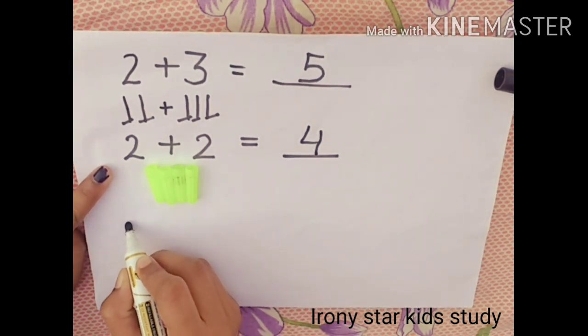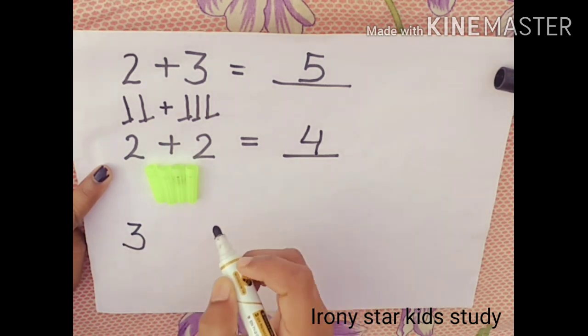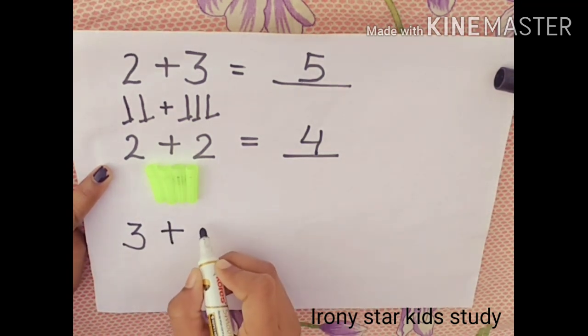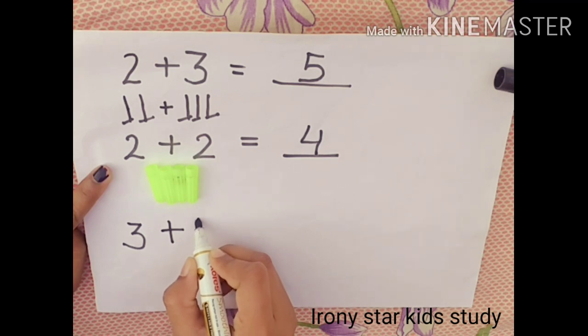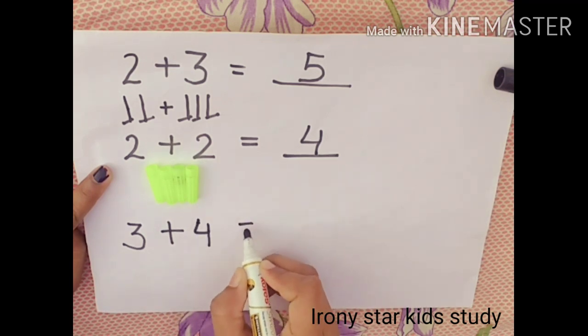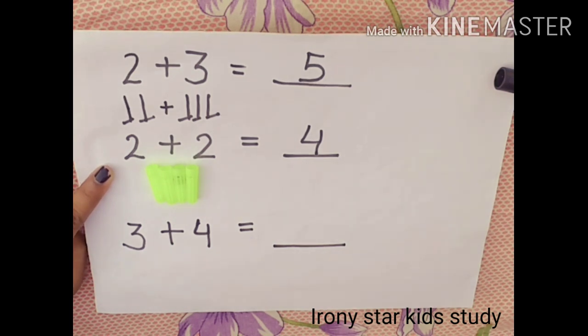So another example we will take of the underline. How you can talk to your child, 3 plus 4 equals to how many will come here? So we will draw the lines.